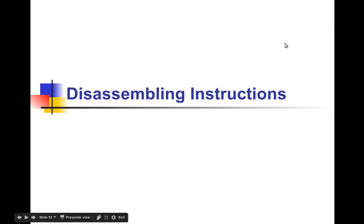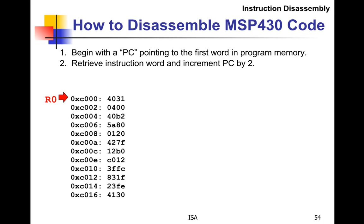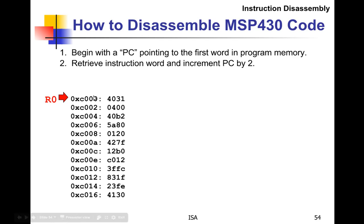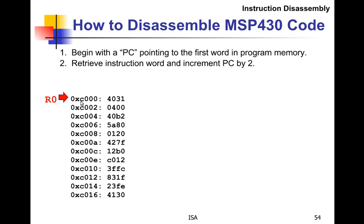This lecture is about disassembling machine code instructions for the MSP430. Over on the left we have addresses, and R0 is another name for the PC, the program counter, which is pointing here. Our program starts at C000, and we have data in memory that we want to disassemble to see what the program would do if we start executing at C000.